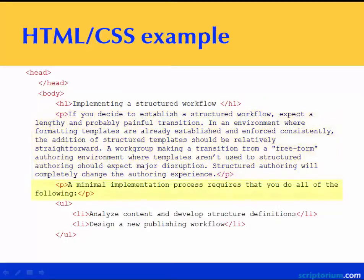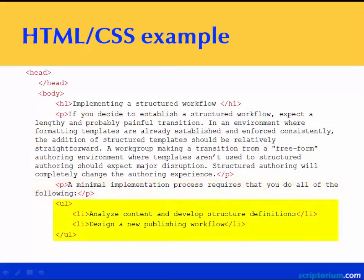Another P tag that identifies the next piece of content. Then we finally have an unordered list — that's what UL means, unordered list. And then we have the bulleted items in the unordered list.